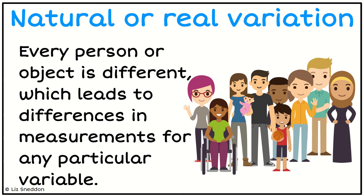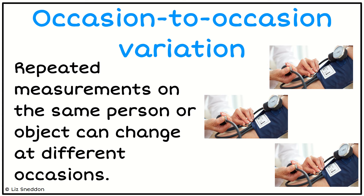Let's have a look at the different sources of variation again to remind us. We've got our natural or real variation — this is just the natural differences between the people or objects that we are exploring. We've also got occasion-to-occasion measurements: when we repeat measurements on the same person or object we can get different results. For example, measuring your blood pressure at different times of the day will give you slightly different measurements every time.